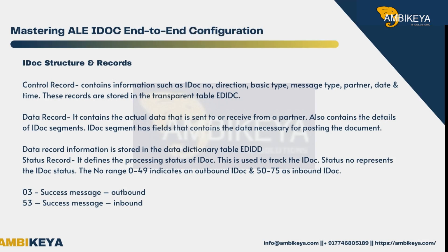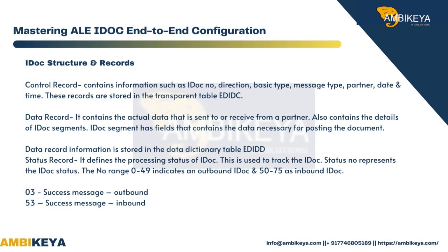Regarding IDOC structure and records — the Control record contains information such as IDOC number, direction, basic type, message type, partner, date, and time. These records are stored in the transparent table EDIK.